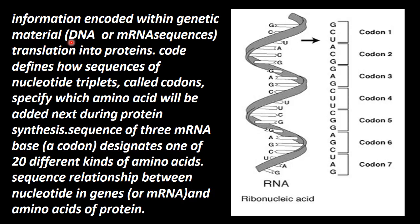The genetic material is DNA, and a copy of it is messenger RNA. This information is present as a sequence. This sequence is to be translated into proteins. Protein production follows a very specific sequence.